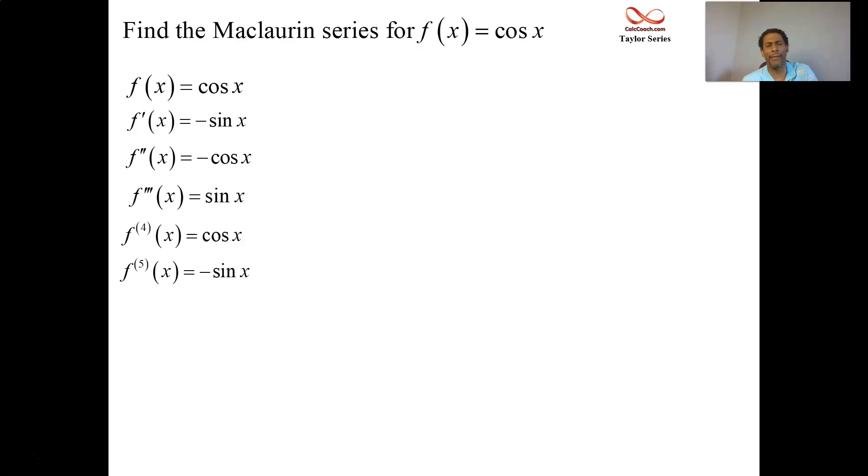In the second column, what we do is we evaluate at x equals a. In this case, a is 0. So we'll just plug a 0 into these. Cosine of 0 is 1, but the sine of 0 is 0. Cosine 0 is 1, but there's a negative in front, so negative 1. Sine of 0 is 0. So we're losing all of the odd terms. And in the even terms, we're going back and forth between 1 and minus 1. Fifth derivative at 0 is 0.